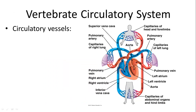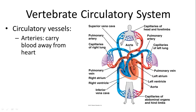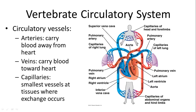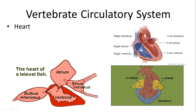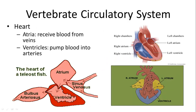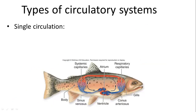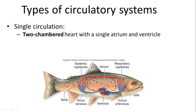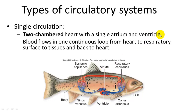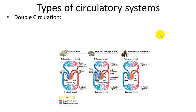Circulatory vessels include arteries, which take blood away from the heart, and veins, which take blood back to the heart. Capillaries are the smallest vessels where gas exchange occurs. The heart has atria which receive blood from veins and ventricles which pump blood into the arteries. Fish have a single circulation with a two-chambered heart — one atrium and one ventricle. The atrium accepts blood, pumps it to the ventricle, which then pumps it to the gills and then to the tissues in one continuous loop.